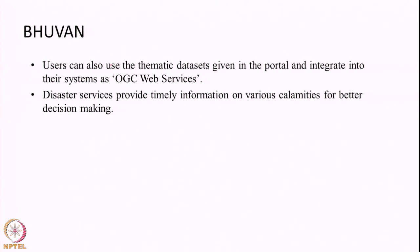Bhuvan enables visualization of satellite imagery and maps, and allows searching and downloading publicly available ISRO data. In addition to satellite data, several thematic products related to land, ocean, atmosphere, and cryosphere are available. From the NRSC site we can also search for IRS images — some Indian remote sensing satellite images require ordering and paying a small fee. Users can also use thematic datasets in Bhuvan and integrate them into their own systems as OGC web services (Open Geospatial Consortium web services).